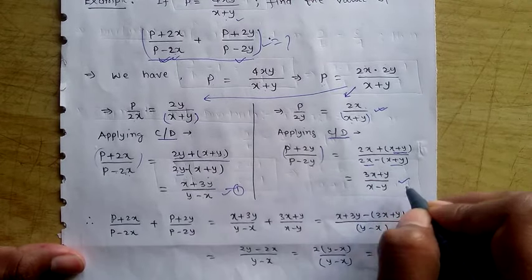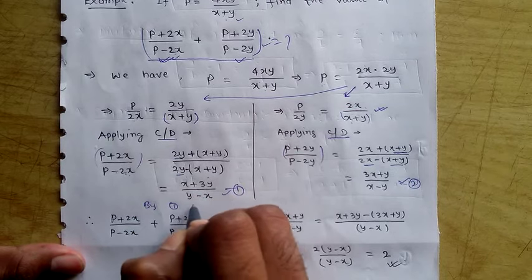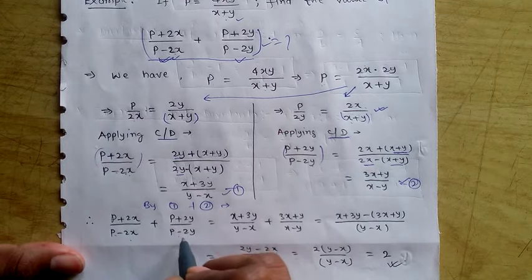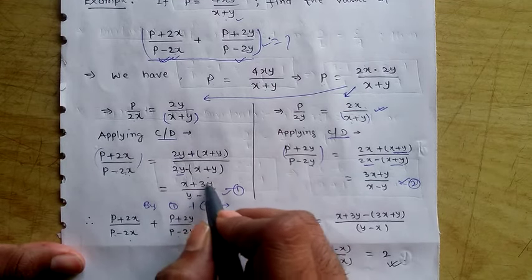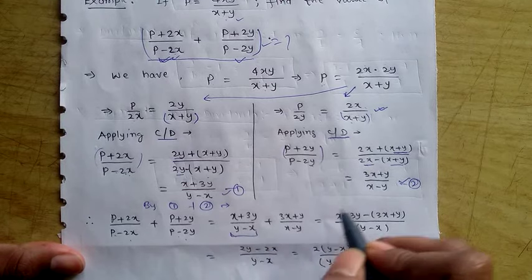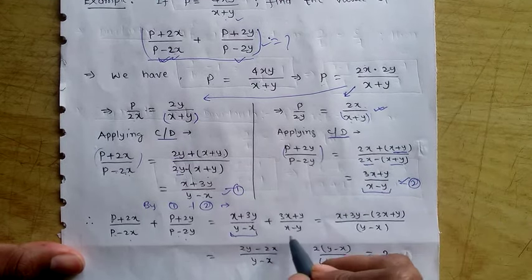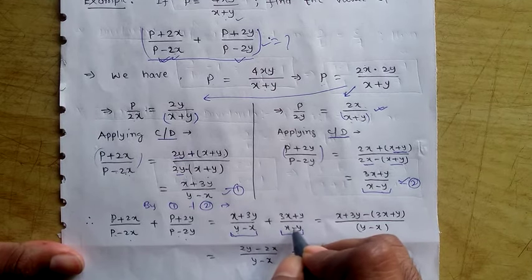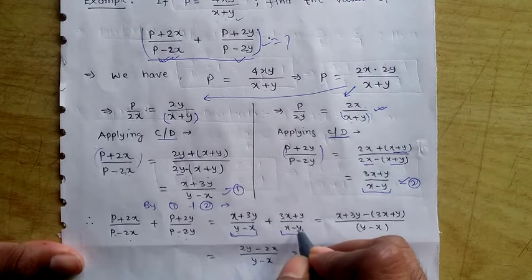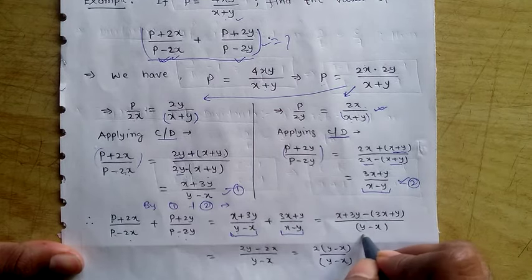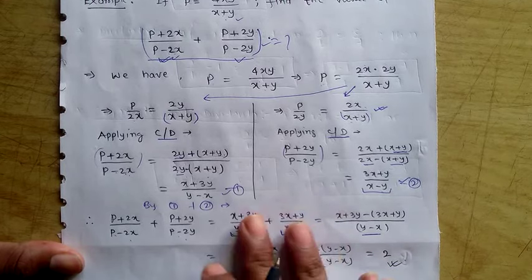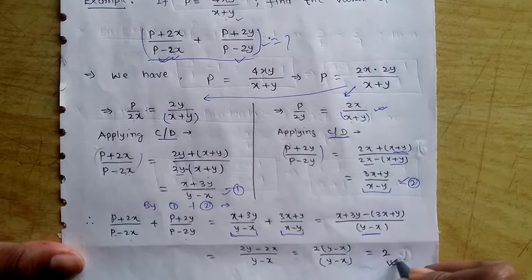Now we add both results — equation 1 plus equation 2. So (p + 2x)/(p − 2x) + (p + 2y)/(p − 2y) = (x + 3y)/(y − x) + (3x + y)/(x − y). Since y − x and x − y are negatives of each other, the LCM is (y − x). Simplifying, we finally get the value 2, which is our answer.